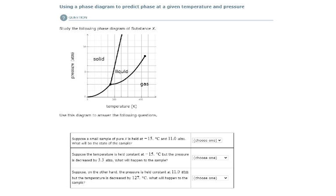So 11 atm would be, this is 2, 4, 6, 8, 10, 12. Eleven would be right in between here, somewhere in there. And negative 15 degrees Celsius.